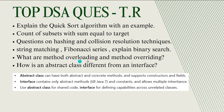What are method overloading and method overriding? Know the basic difference between them. What is an abstract class and what is the difference from an interface? This is the most repeating question. Abstract class can have both abstract and concrete methods and supports constructors and fields. But an interface contains only abstract methods, not concrete methods, and constants, and follows multiple inheritance. Use abstract class for shared code and interface for defining capabilities across unrelated classes.